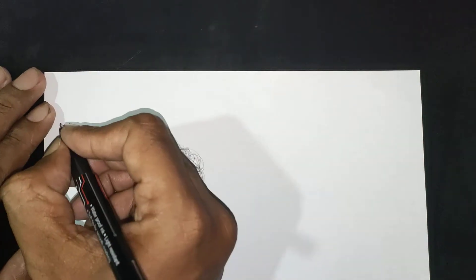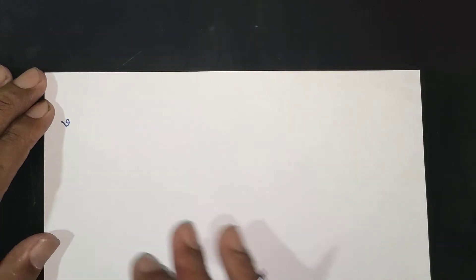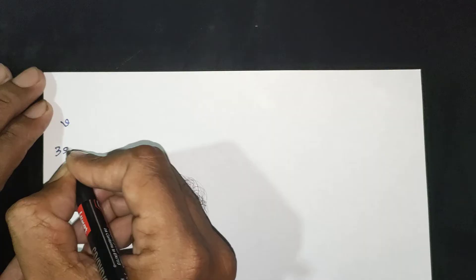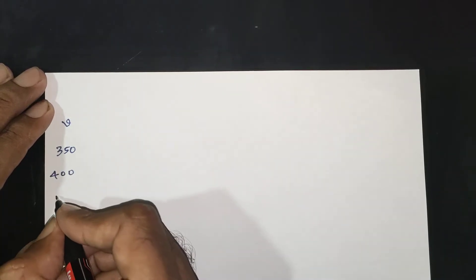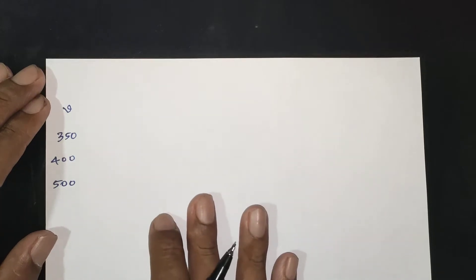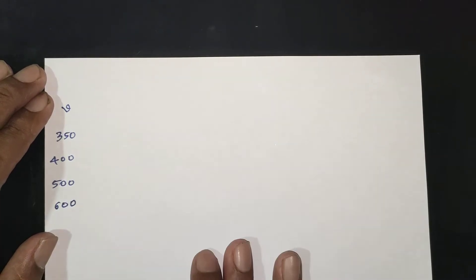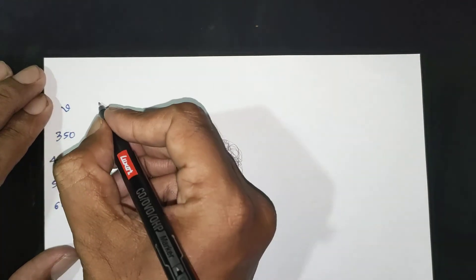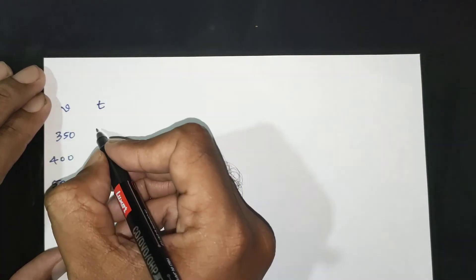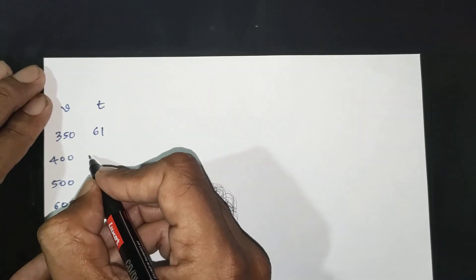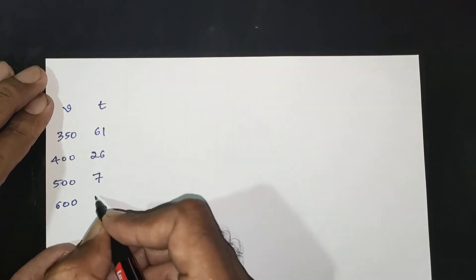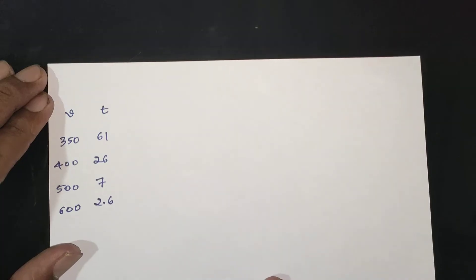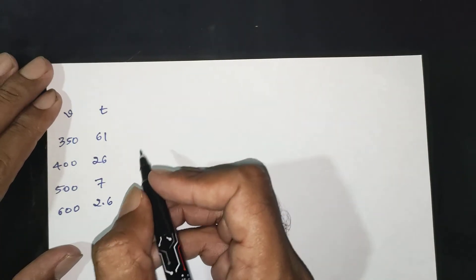The data values are: small v (cutting speed) — 350, 400, 500, 600. And corresponding lifetime T values: 61, 26, 7, 2.6.